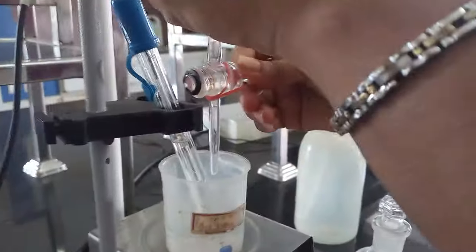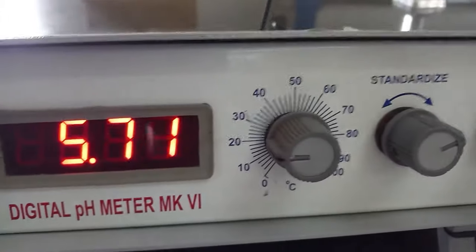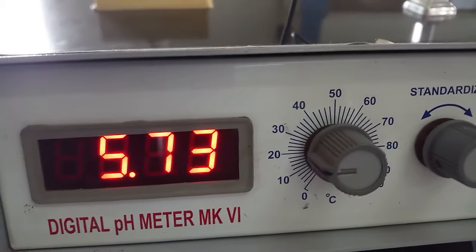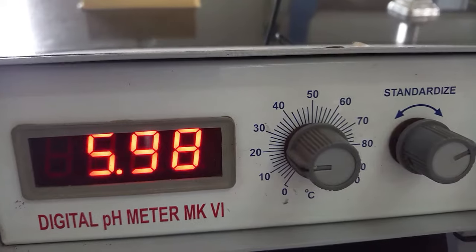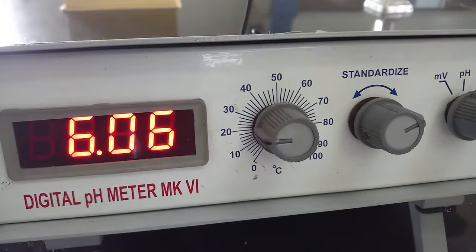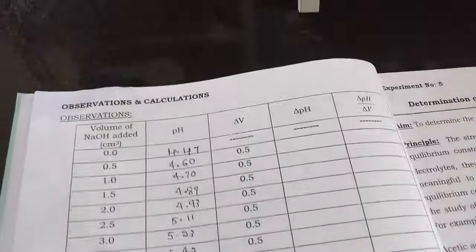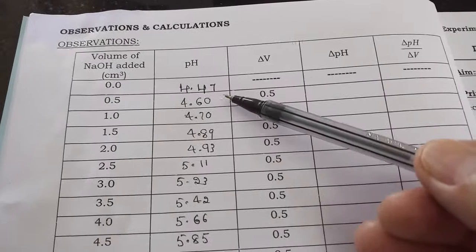Here you can see upon adding NaOH the pH is increasing. For every 0.5 ml successive addition of NaOH, pH is increasing, that you have to record. Now here you can see the value of pH is increased on adding sodium hydroxide.